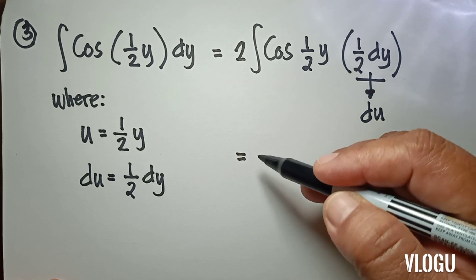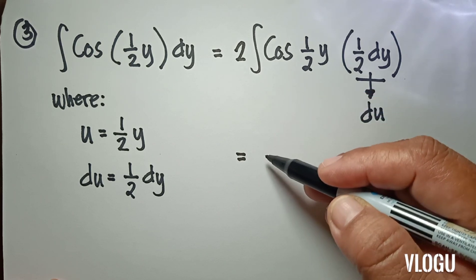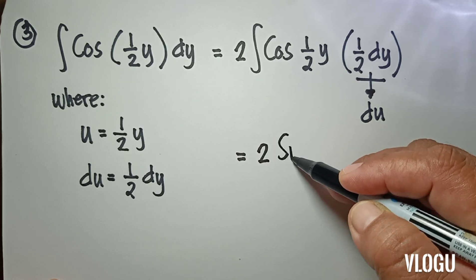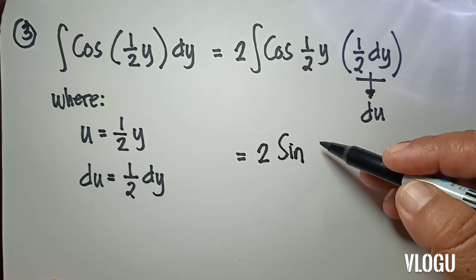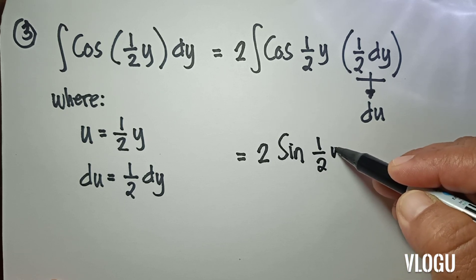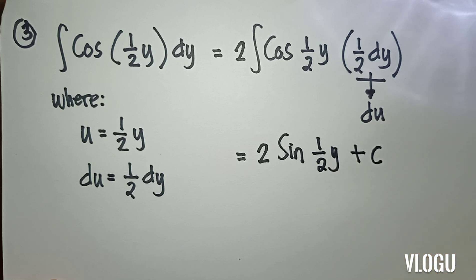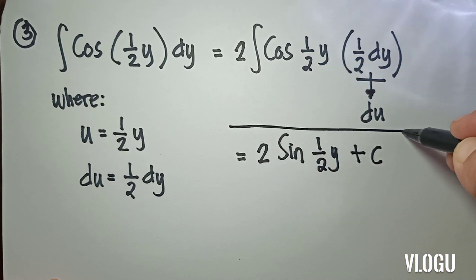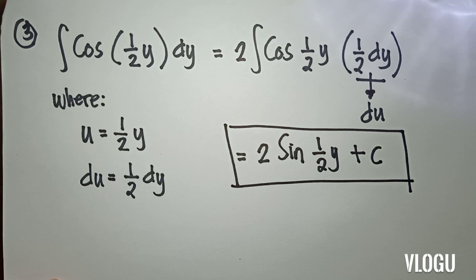So our final answer — the integral of cos u du — is equivalent to 2 sine(½y) plus c. That is our final answer.